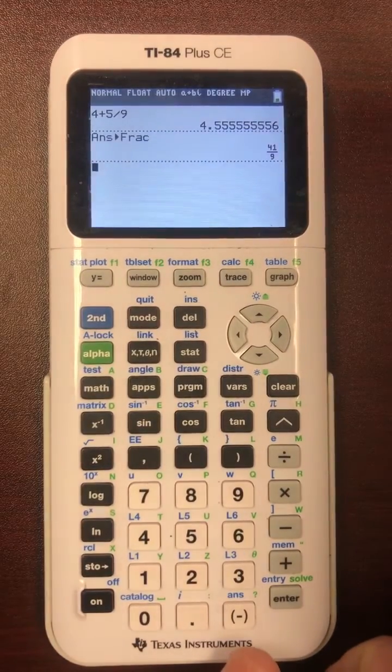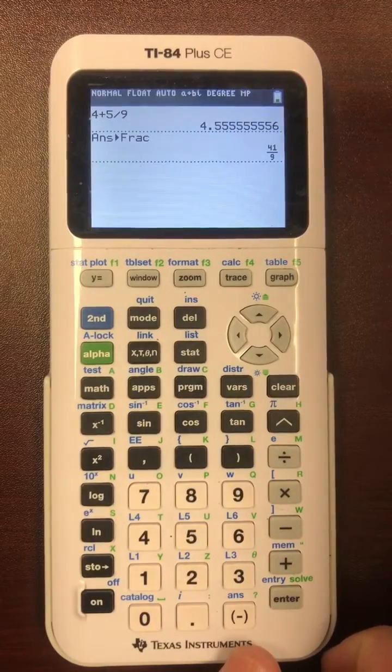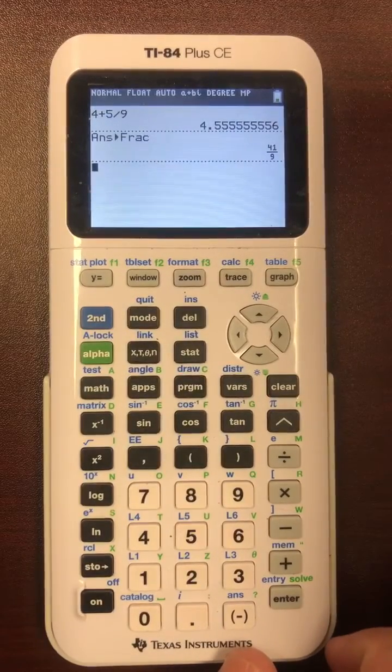Now let's say we didn't know that it was 4 and 5 ninths already. Let's say all we had is 41 ninths and we didn't want to waste a lot of time transforming it backwards and forward.